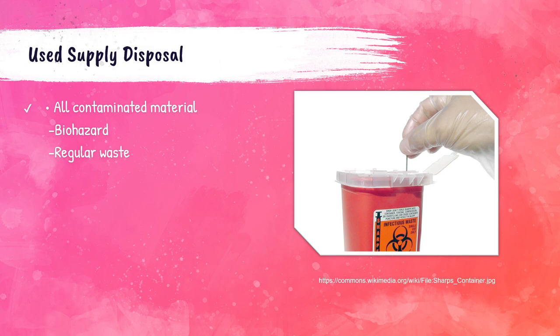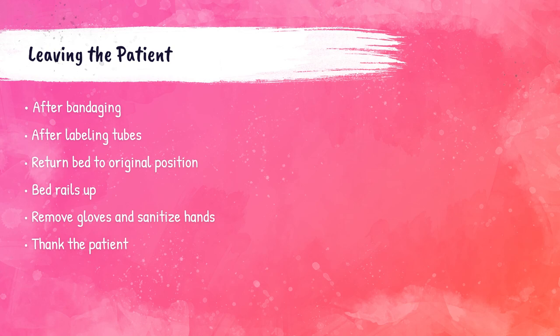Before leaving, return the bed to its original position with bed rails up in an inpatient setting. Remove gloves and sanitize hands, then thank the patient. Specimens must be delivered to the lab via couriers, scheduled transport, or a pneumatic tube system. Complete any required paperwork or computer logging — some sites log the number of samples collected for statistical purposes. A sample should never be left in a patient's room or be unlabeled, as an incorrect label can kill a patient.